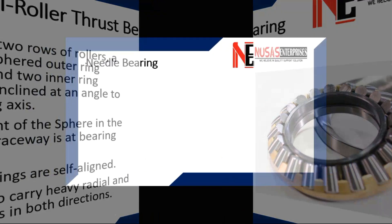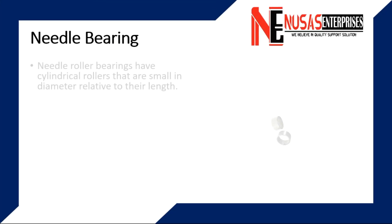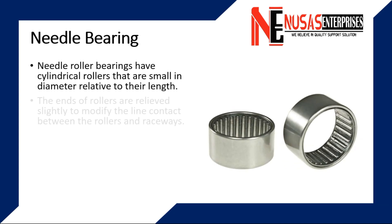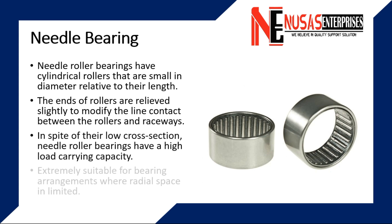Needle roller bearings have cylindrical rollers that are small in diameter relative to their length. The ends of rollers are relieved slightly to modify the line contact between the rollers and raceways. In spite of their low cross-section, needle roller bearings have a high load carrying capacity. Therefore, they are extremely suitable for bearing arrangements where radial space is limited.